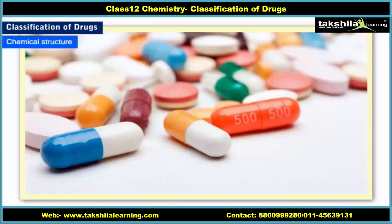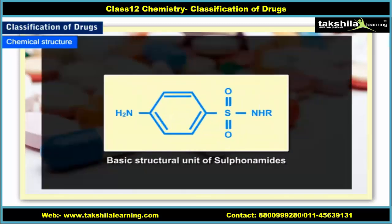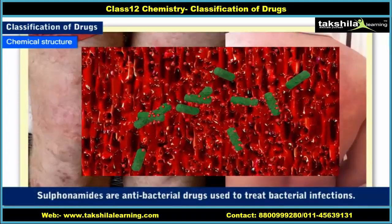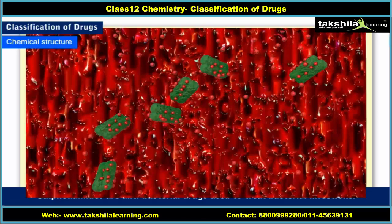Drugs classified according to their chemical structure share common structural features and often have similar pharmacological activity. For example, all sulfonamides have a common structural feature as shown here. Sulfonamides are antibacterial drugs used to treat bacterial infections.